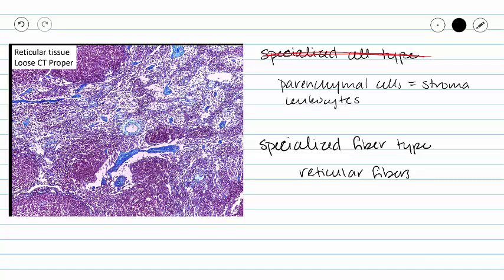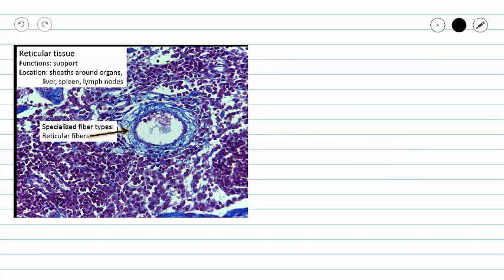We've simplified the material a bit by just focusing on our specialized fiber type. Here we have a close-up view of our lymph node so that we can see our specialized fiber types a little bit more clearly. You can see that surrounding a capillary we've got lots of reticular fibers pointing in all directions.